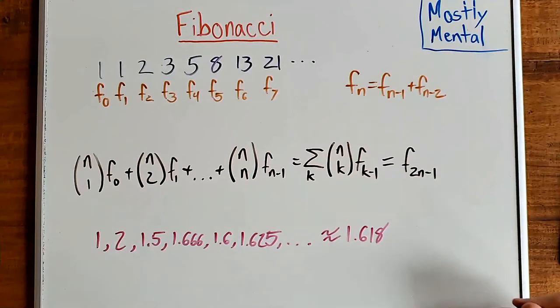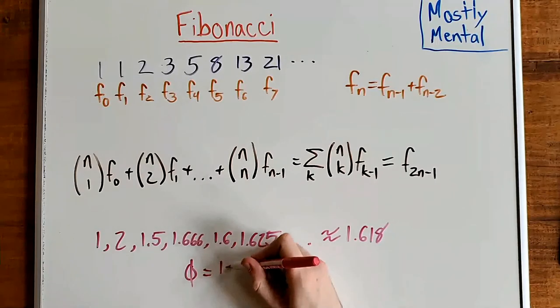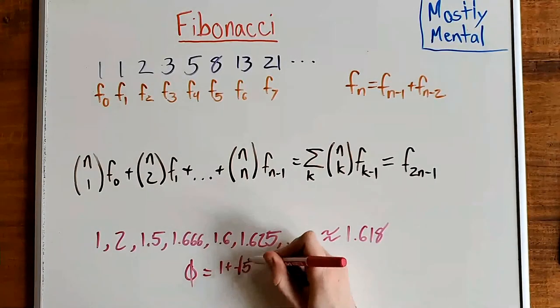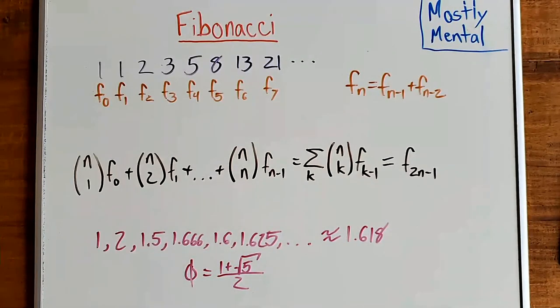That value, known as the golden ratio, phi, is equal to 1 plus the square root of 5 over 2. Where does that come from? That's the subject for the next video.